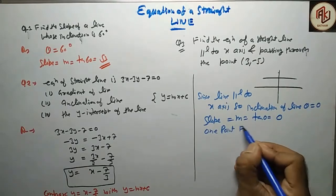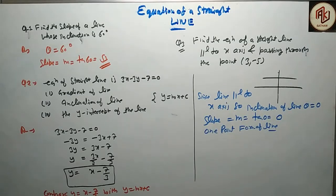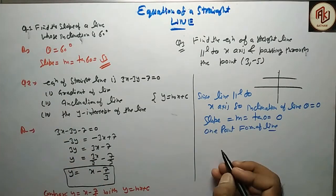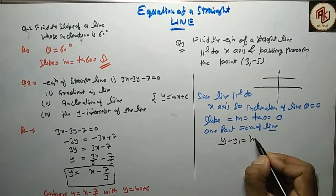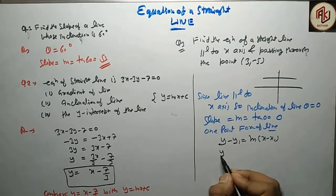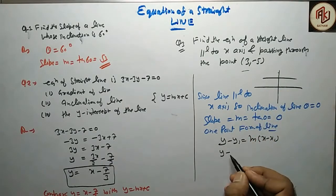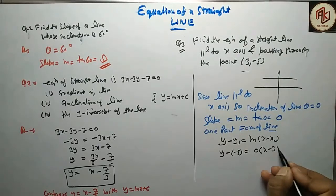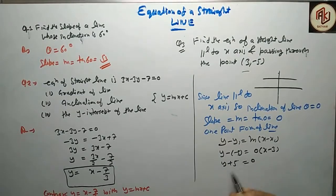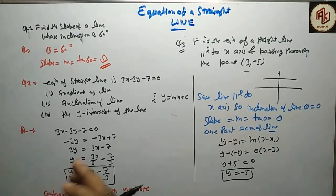One point form of line कहता है: y minus y1 = m(x minus x1)। Point (3, minus 5) है, तो y1 = minus 5 और m = 0। तो y minus (minus 5) = 0 × (x minus 3), यानी y + 5 = 0, इसलिए y = minus 5। यही इस question का answer है।